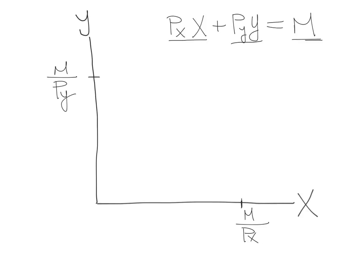So these are the extreme cases if the consumer only spends all his money on only one thing. But he can also buy combinations of those two things. And all the combinations will be given by this line right here, which we call the budget line.